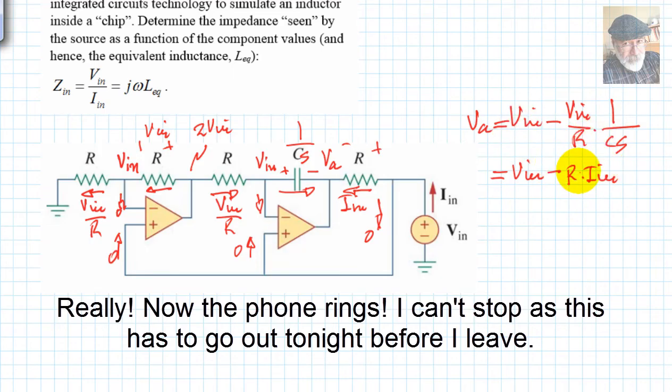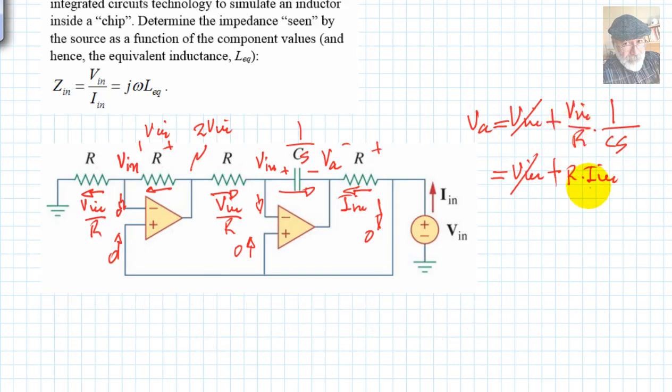We have one equation, so we can move Vin, we can cancel out these two, so positive signs, and we can divide both sides by Iin, and we get that V input divided by I input is R squared, R squared Cs.